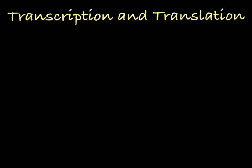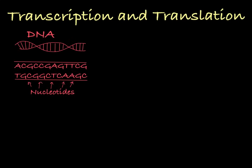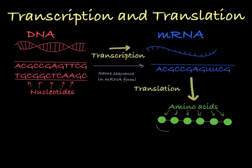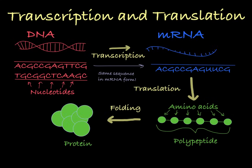In the cell, the instructions for building a protein are located within the DNA in the form of a specific sequence of nucleotides. Through the process of transcription, this sequence of nucleotides in a gene is transcribed, or copied, into an RNA form to make a molecule of messenger RNA. In the process of translation, translation machinery, including a ribosome and tRNA molecules, read the mRNA molecule and translate the nucleotide language into a sequence of amino acids linked together to form a polypeptide. Once constructed, the polypeptide will fold into a protein.